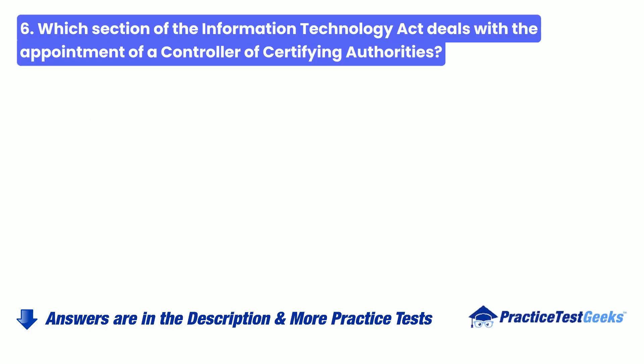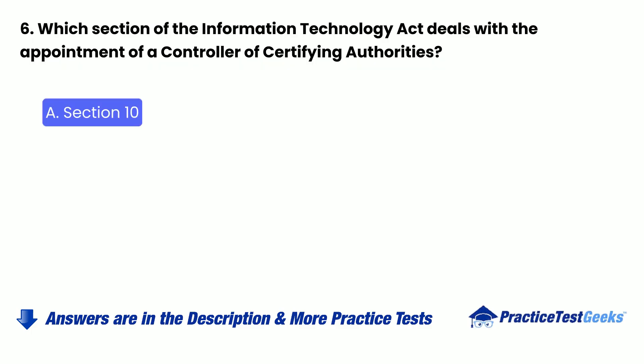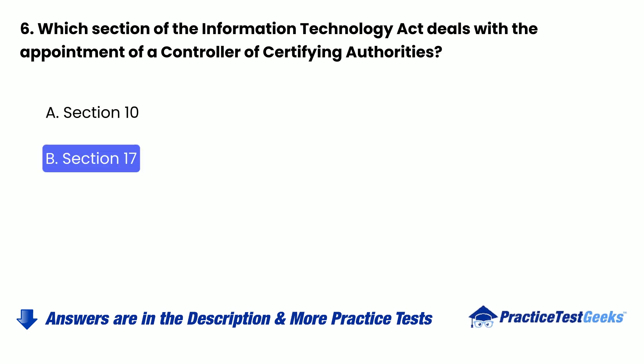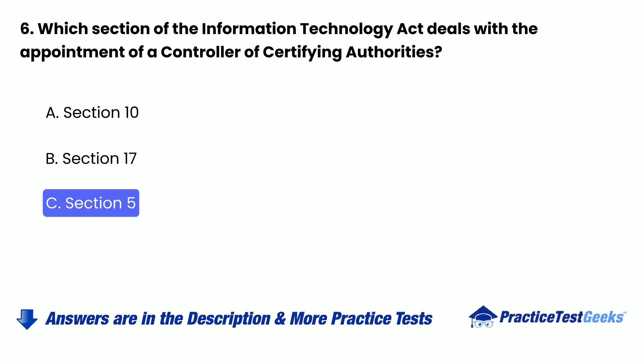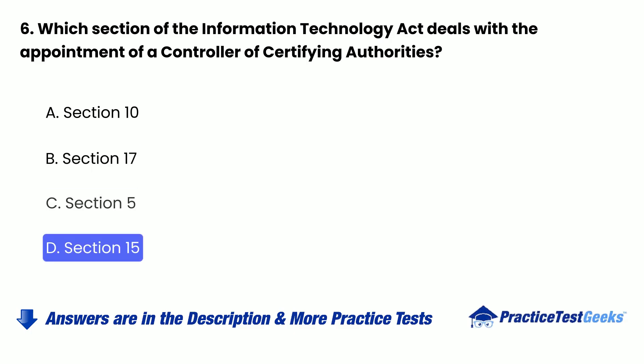Question 6: Which section of the Information Technology Act deals with the appointment of a Controller of Certifying Authorities? a. Section 10. b. Section 17. c. Section 5. d. Section 15.